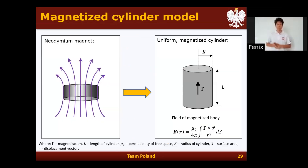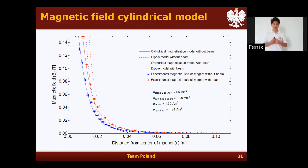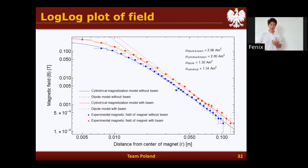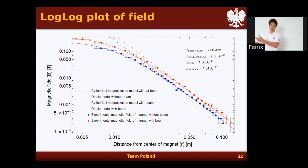To fix this, we use the magnetized cylinder model, with equations describing the magnetic field at any point in space. When we fit this improved model, we can see that even for small distances from the magnet, we are able to predict the magnetic field very well. We then use the defined value of magnetization for later theoretical purposes.